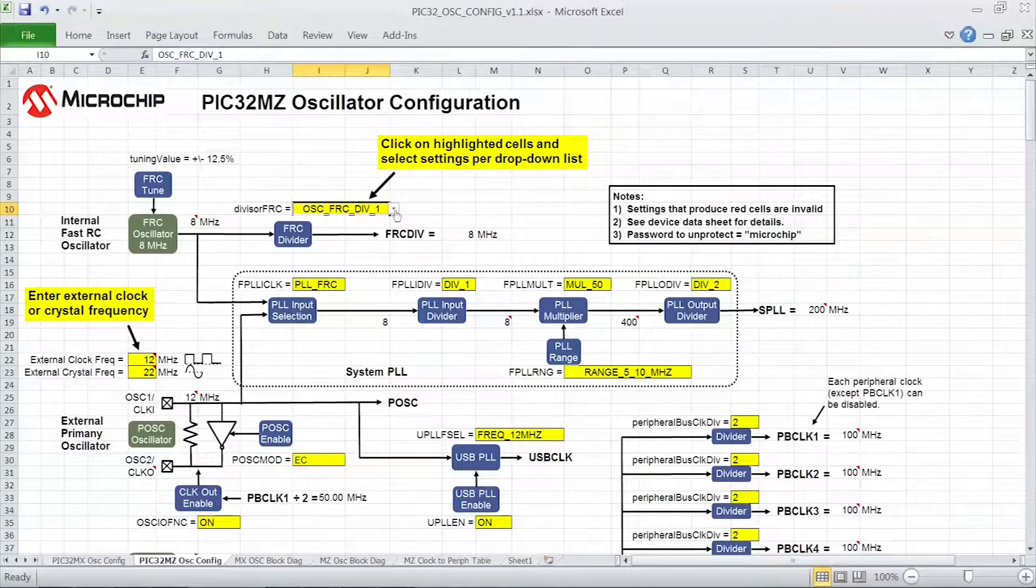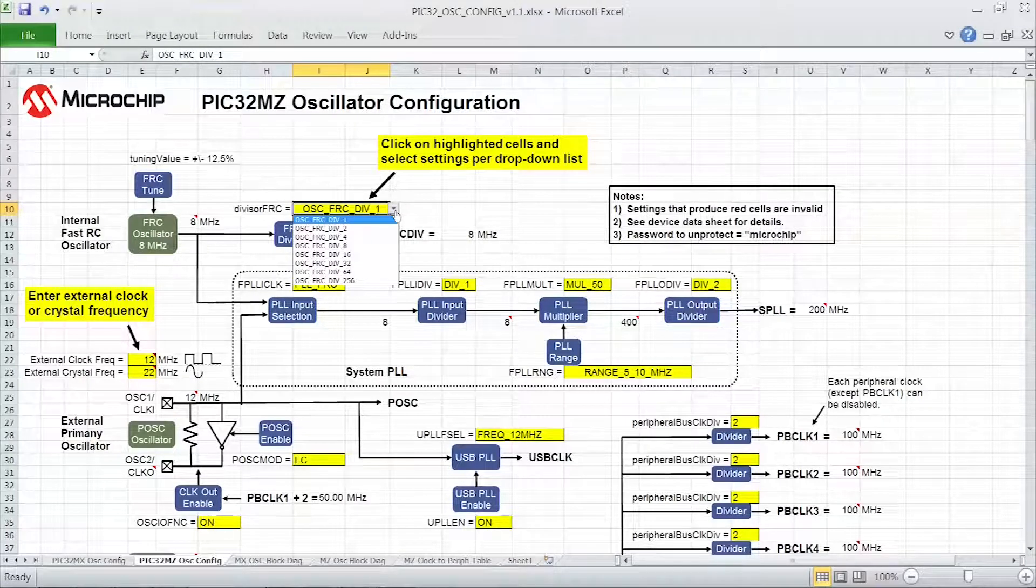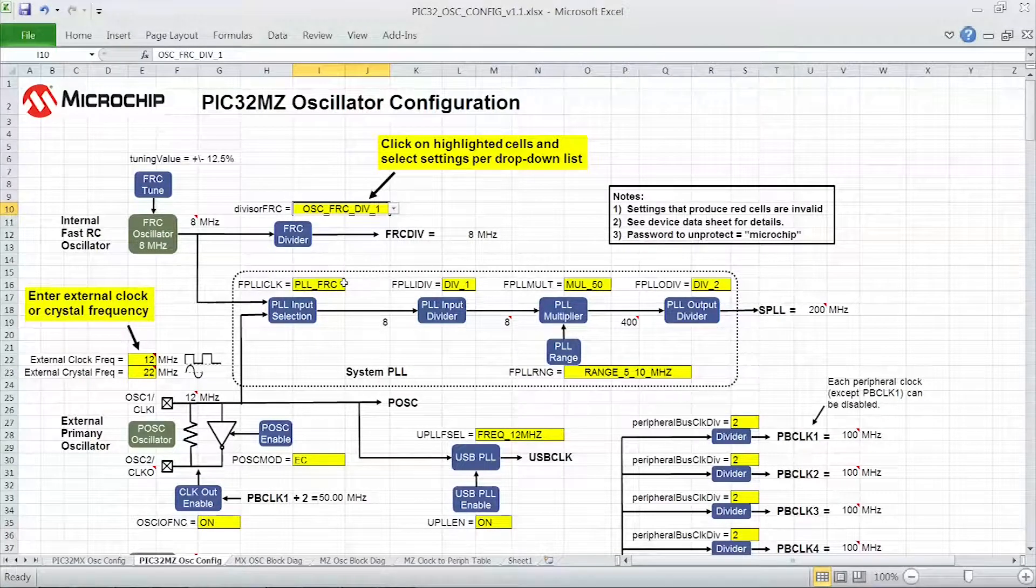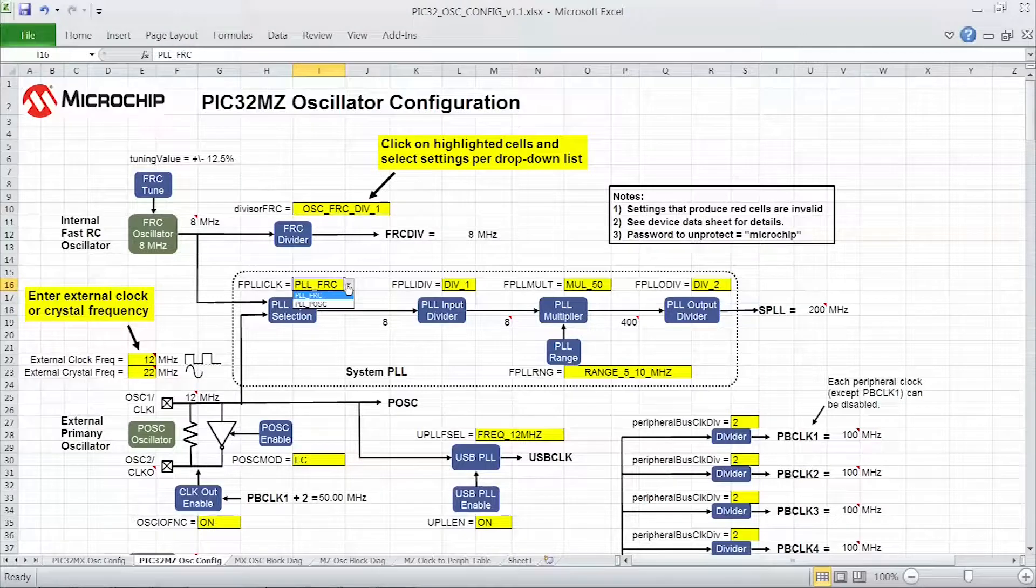The only cells you should be changing in this spreadsheet have been highlighted in yellow, and all possible settings are provided in each drop down list.